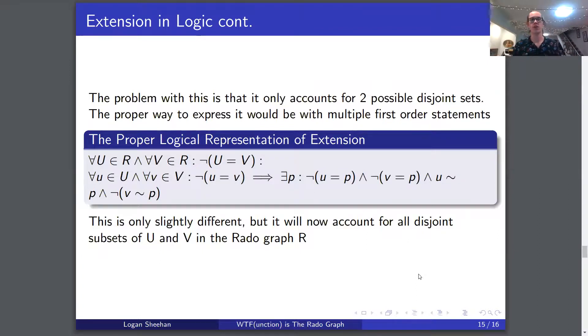The proper way to express this would be with multiple first order statements. We have to state: for all U in R and for all V in R such that U does not equal V, then for all u in U and for all v in V such that u does not equal v, this implies there exists a p such that u does not equal p, and v does not equal p, and u is related to p, and v is not related to p. When we say related, I mean has an edge between them. This is only slightly different from the previous statement, but now it accounts for all disjoint subsets of U and V in R. For time's sake, I'm only going to show this one property in terms of logic, but it is cool to see we are able to take the Rado graph properties and do them in terms of first order logic.